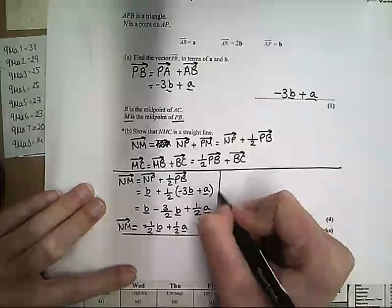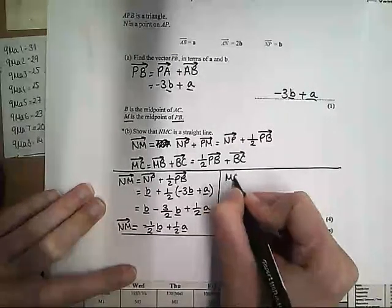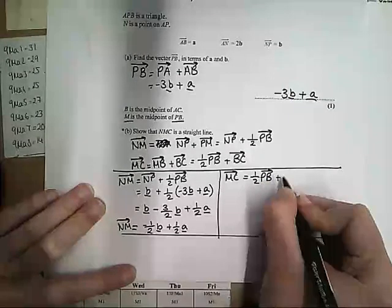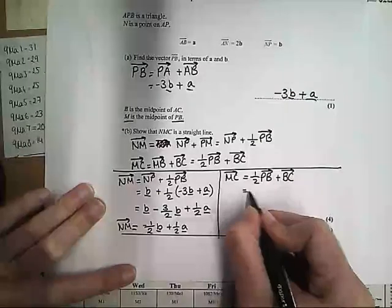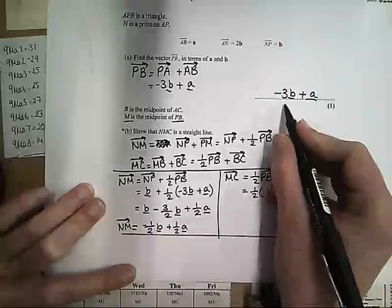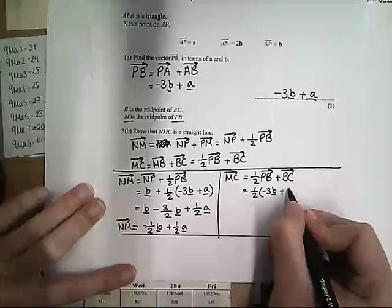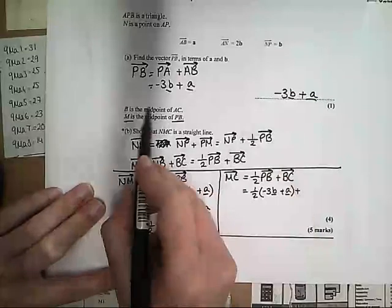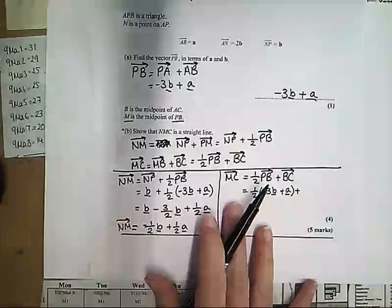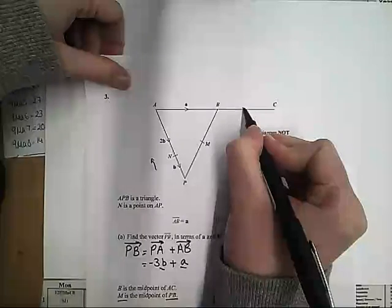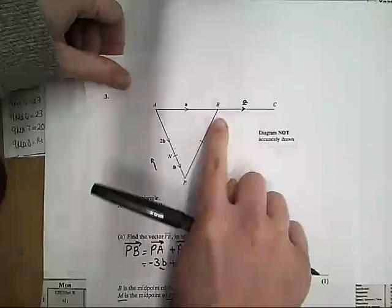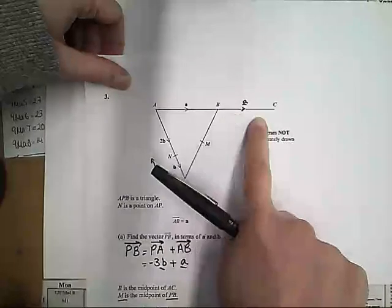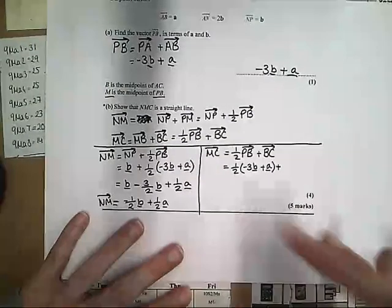Okay, then I'm going to do M to C. So M to C, we've already said, is a half of P to B plus B to C. So a half of P to B is, again, half of what we've got. We've already got P to B, so that's half of -3B plus A. And then B to C, because we know that B is the midpoint of AC, we must know that that is also A, because B is the midpoint of AC. So if this bit's A to get to halfway, this must be A. So B to C must also be A.